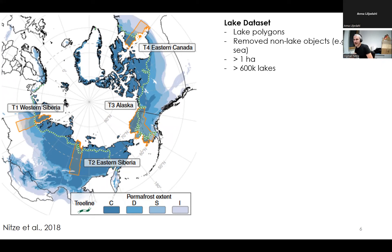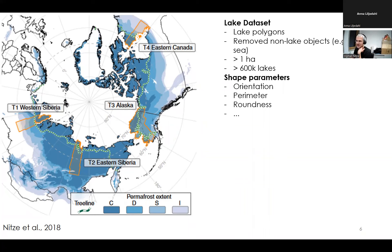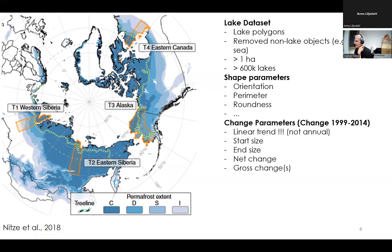We created a lake dataset from 1999 to 2014 — lake polygons with known river and sea objects removed to focus on lakes. The filtering used a machine learning model and worked more or less fine, though perhaps a few too many were removed. We did that for all lakes bigger than one hectare, totaling around 600,000 lakes. Many of them are in eastern Canada where there are a lot of lakes, but they're mostly of glacial origin so dynamics are different.